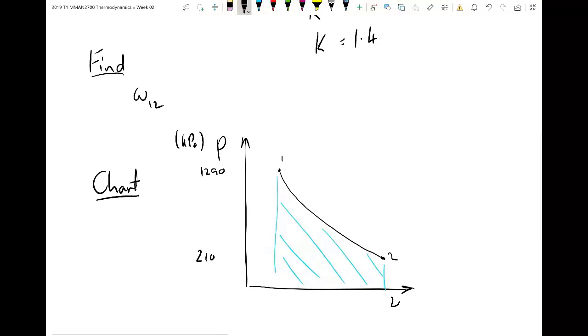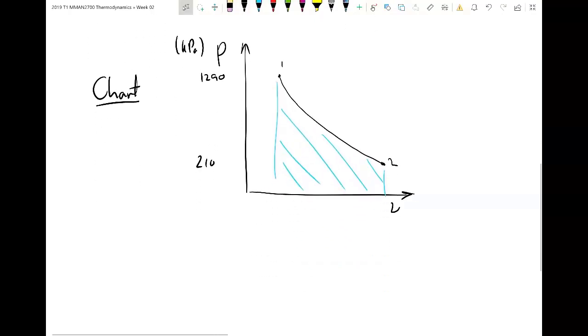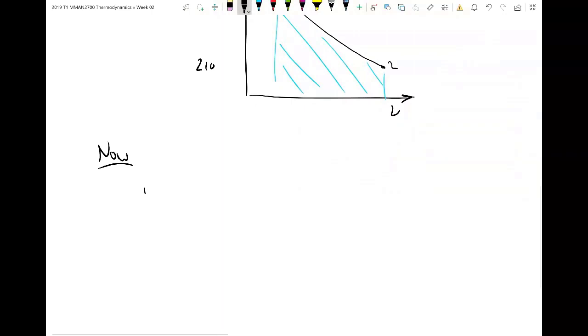One, two and we want to find the work and work is here under the curve. Cool. Now we're ready to do some maths. But it's good to know what we're working for. The governing formula for this, which is the sort of formula you could expect to find from a formula sheet, is work 1, 2 equals P1 V1 minus P2 V2 divided by N minus 1.